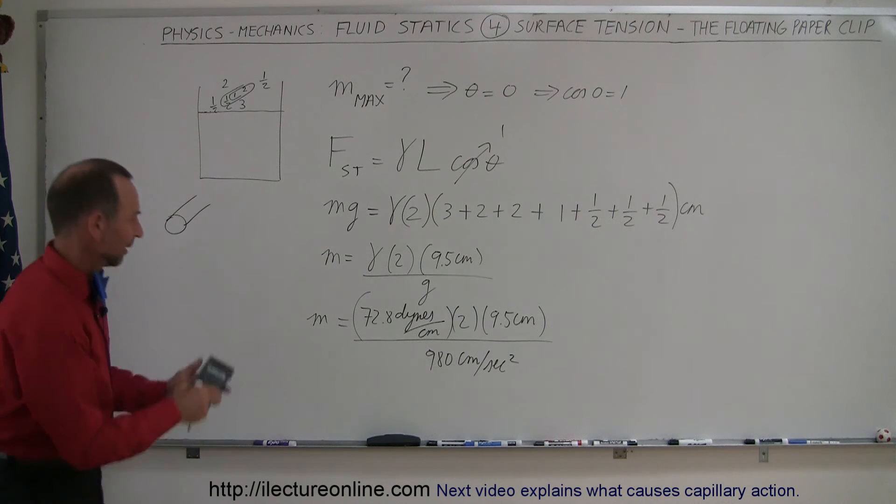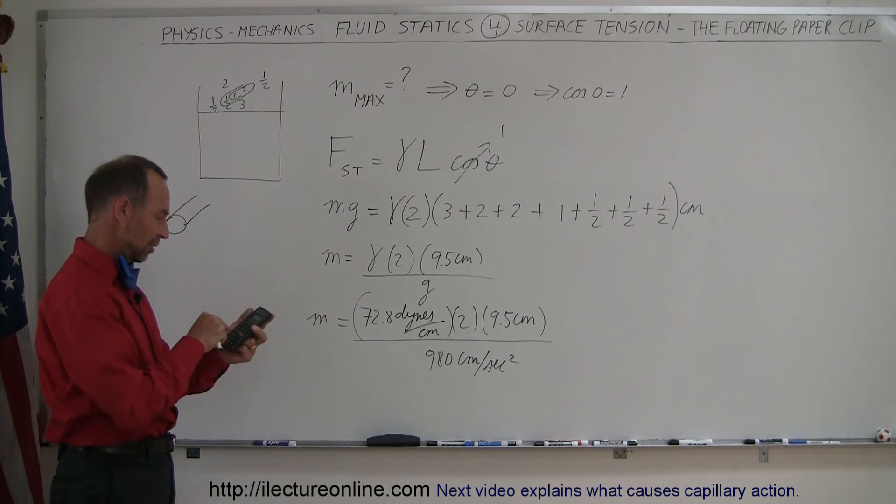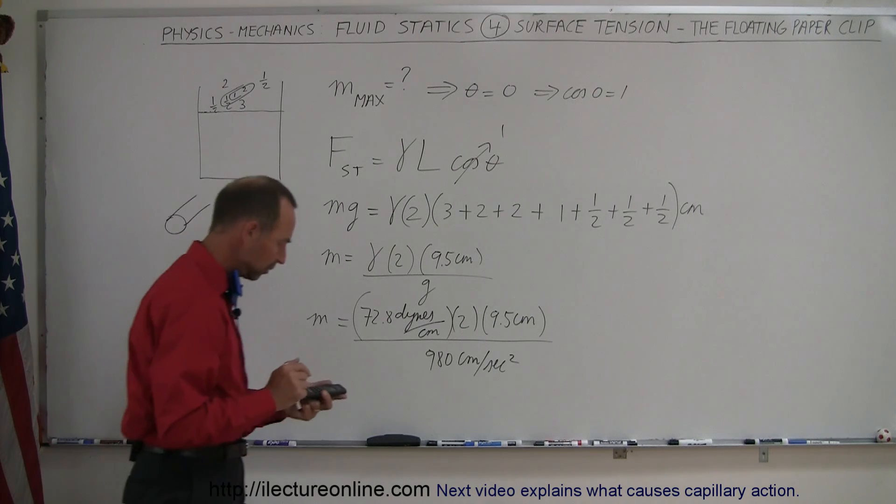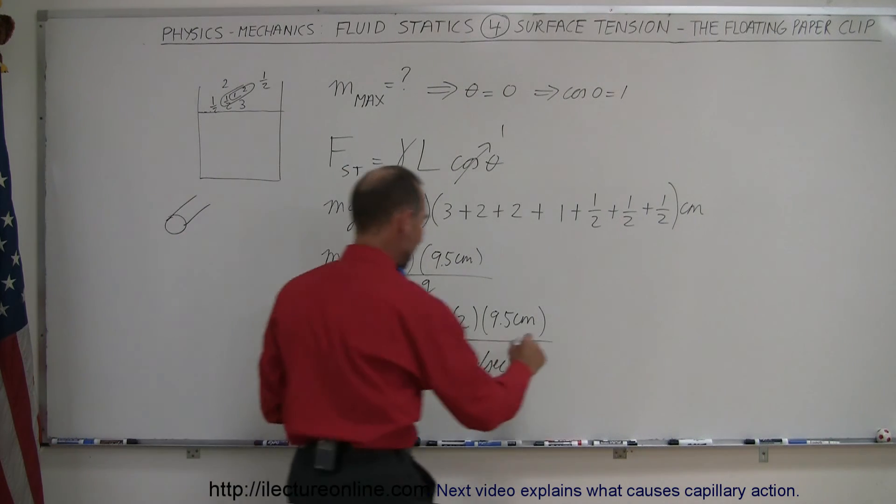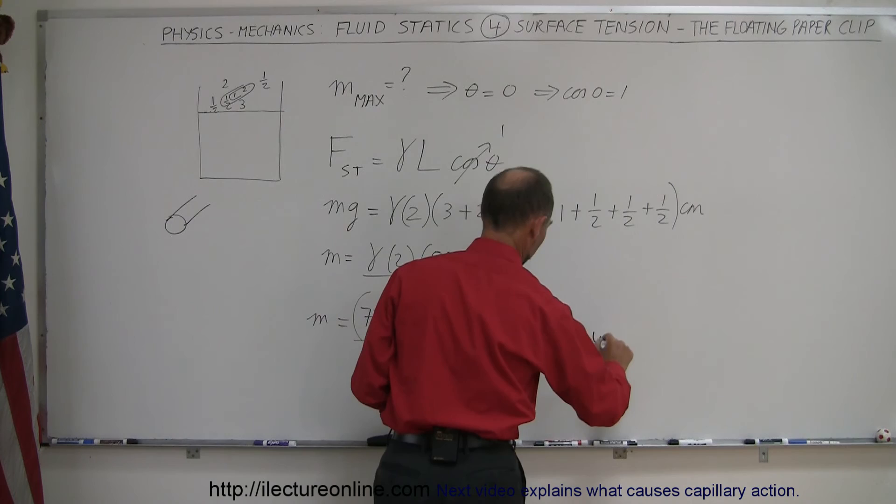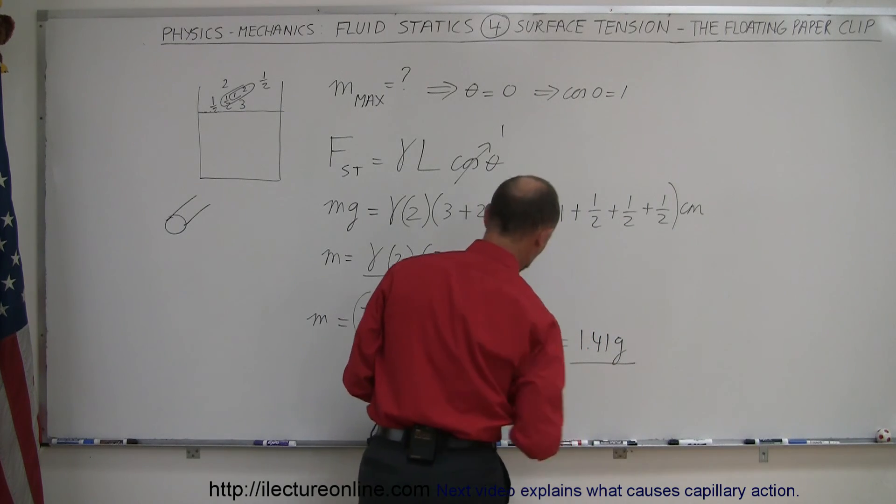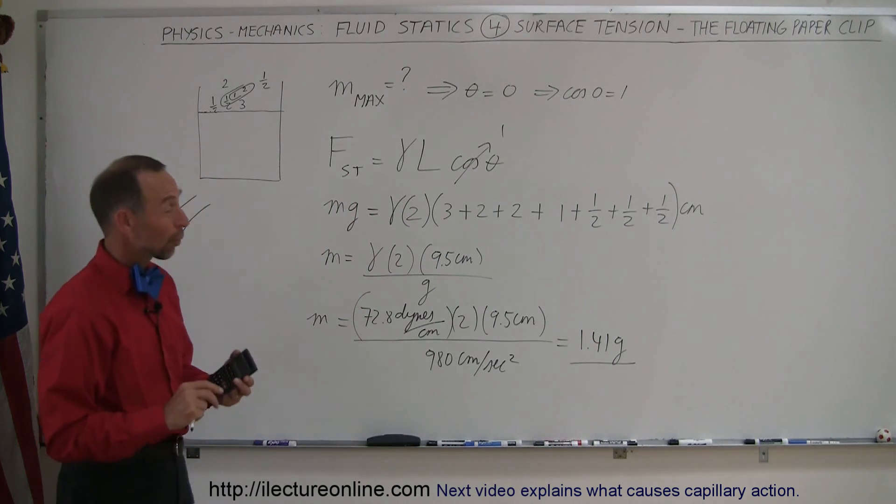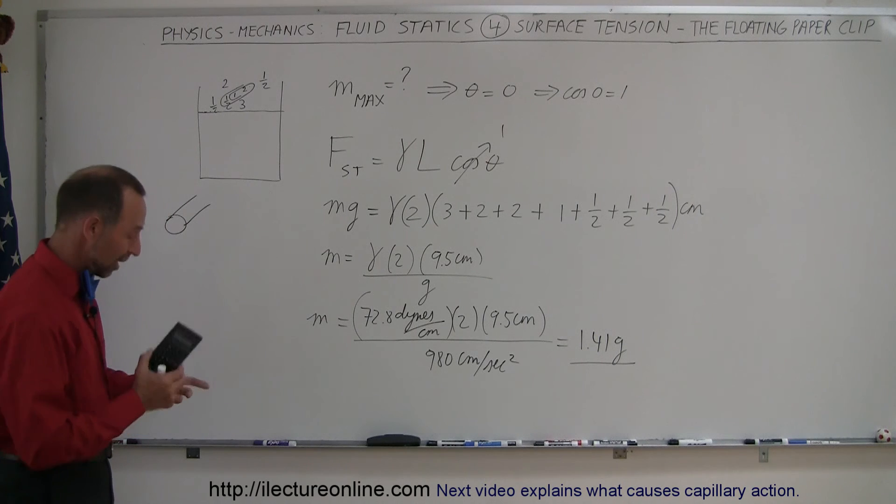Okay, now I need a calculator to figure out what that is equal to. 72.8 times two times 9.5, and divide by 980, and that would be in grams, 1.41 grams is the maximum mass of a paper clip. 1.41 grams would be the heaviest or most massive paper clip you can try this with.